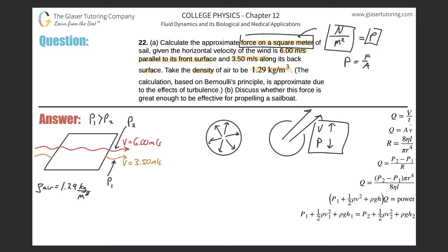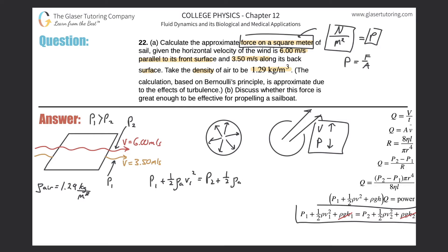We can calculate this using Bernoulli's principle. Notice there's really no change in height here — we're assuming no height differential — so that term cancels out. What we're left with is: P1 plus one-half times the density of air times V1 squared equals P2 plus one-half times the density of air times V2 squared.